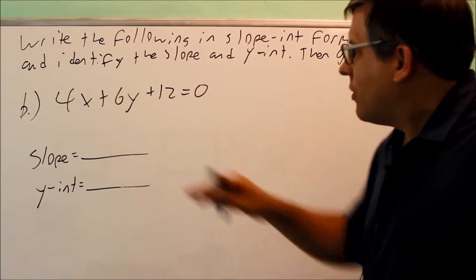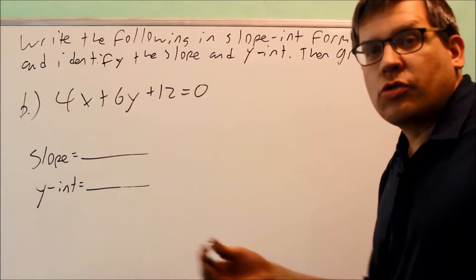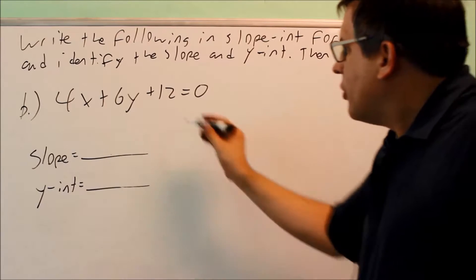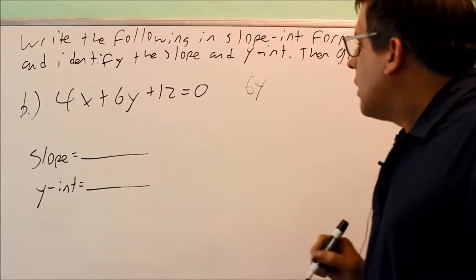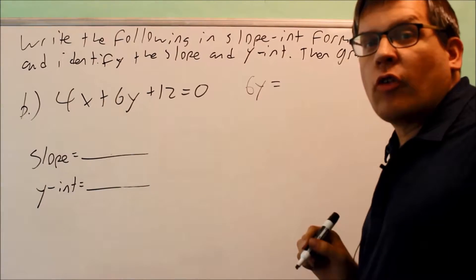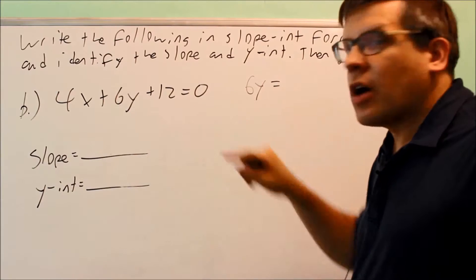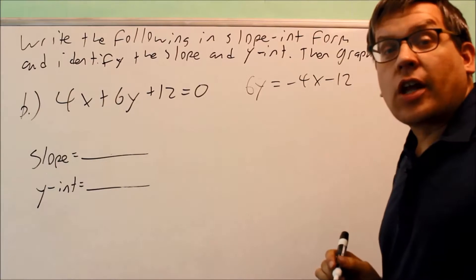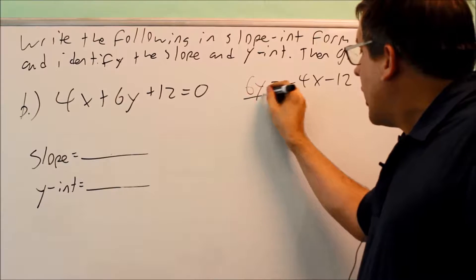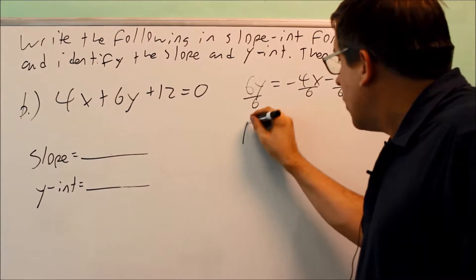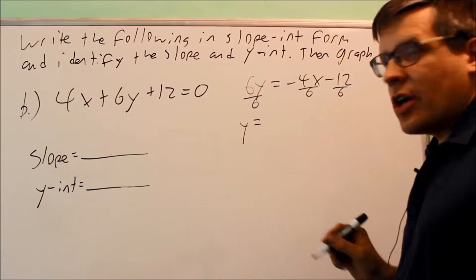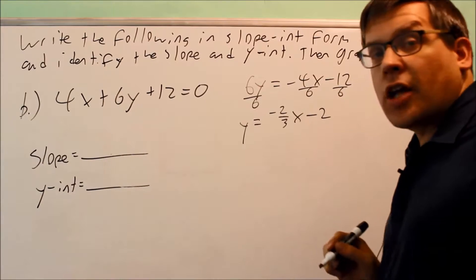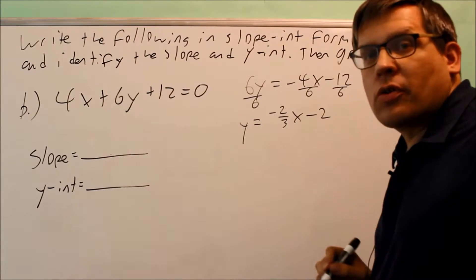For part B, the equation as written is not in slope-intercept form, so we need to do a little work to get it into proper form. We want to solve for y. We keep the 6y on one side and move everything else across the equal sign — the 4x and the 12 both become negative. So we have negative 4x and negative 12. Now we divide everything through by 6. We get y equals negative 4 over 6, which reduces to negative 2 thirds, and negative 12 over 6, which is negative 2. So this is the proper slope-intercept equation.